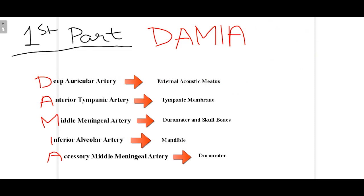For the first part, you can use the mnemonic DAMIA to remember its branches. D stands for deep auricular artery, which supplies the external acoustic meatus. A is the anterior tympanic artery, which supplies the tympanic membrane. M is the middle meningeal artery, which supplies the dura mater and skull bones. I represents the inferior alveolar artery, which is important in dentistry as it supplies all of the mandibular teeth. Finally, A is the accessory middle meningeal artery, which also supplies the dura mater.